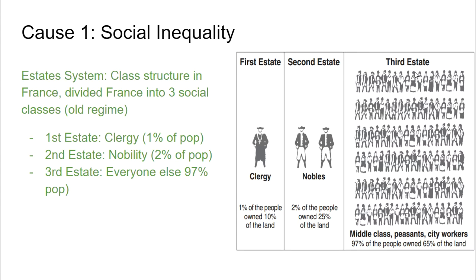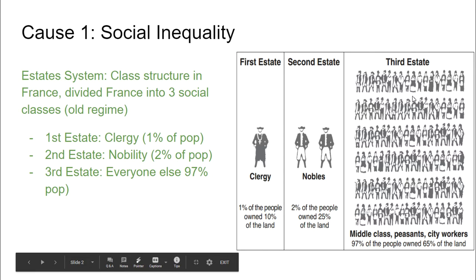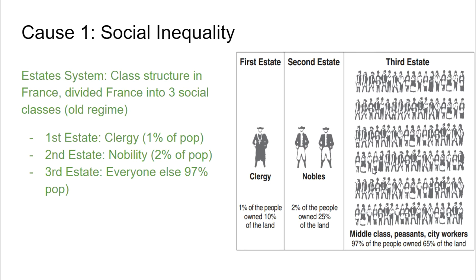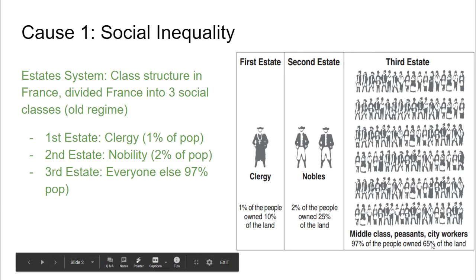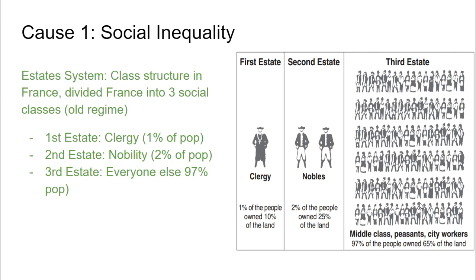Then you have the third estate — 97% of the population — and it basically includes everyone who's not within the clergy or the nobility. So this is your middle class, your peasants, city workers, farmers — basically everyone else, your commoners. They share 65% of the land. We can already see there's an unequal distribution of land, and the majority of the wealth in France is concentrated within these really small first two social classes.